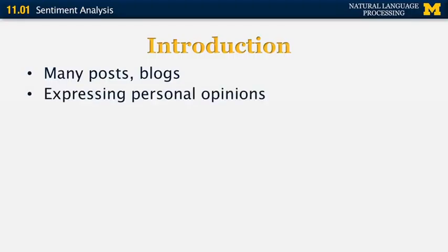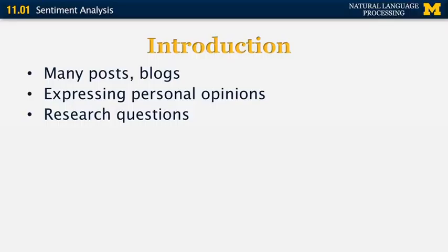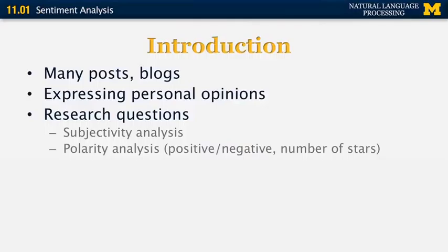There are many posts and blogs that express sentiment, some of them expressing personal opinions. There are different research questions we're interested in. One is subjectivity analysis — before we decide that something is positive or negative, we have to decide whether it's subjective or not, because factual information is different from subjective information. Once we've performed subjectivity analysis, we can do polarity analysis, essentially labeling things as either positive or negative, or perhaps giving them a number of stars — for example, giving a movie review four or five stars out of five.